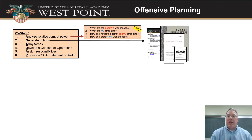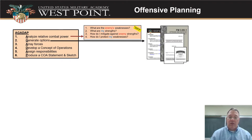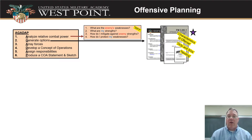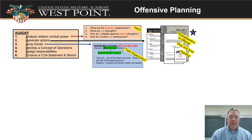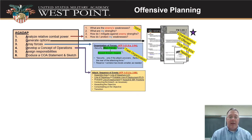We can do that comparison by warfighting function. Then we go to generate options — that's really about turning back to doctrine. We can look at our forms of maneuver, we have guidance about how to do these different things, and it gives us some templates to help us think about the different ways we can execute. Then we analyze and decide what we're going to do — that's all about the characteristics of the offense, our decisive operations, supporting operations, and how they all nest together. Then we array our forces — at that step we're just looking at generic forces: how many fire teams do I have, where do I put them to form the elements that fit into my doctrinal templates. That's all about task organization — it's a generic task org at that point.